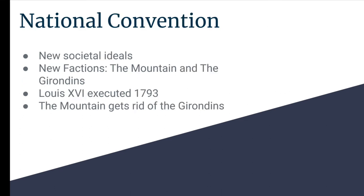The National Convention was the next government to take power in France and replace the Legislative Assembly. France was proclaimed a republic on September 21st, 1792. However, their rule didn't last long due to infighting, and basically the Mountain became the new form of radical Republicans.